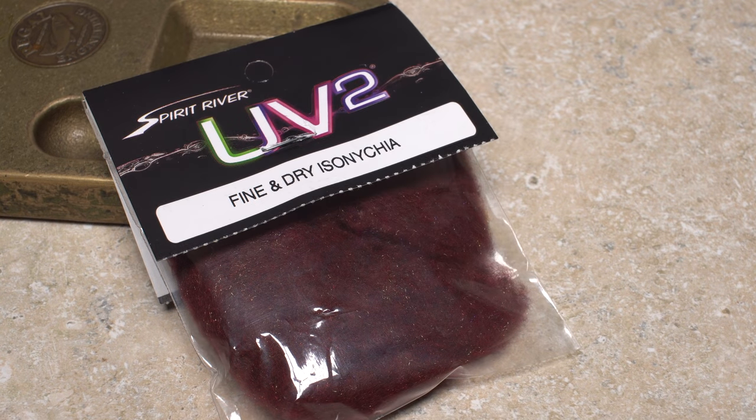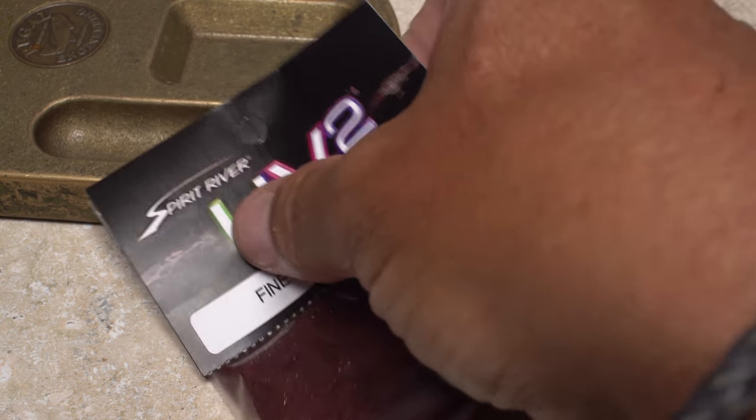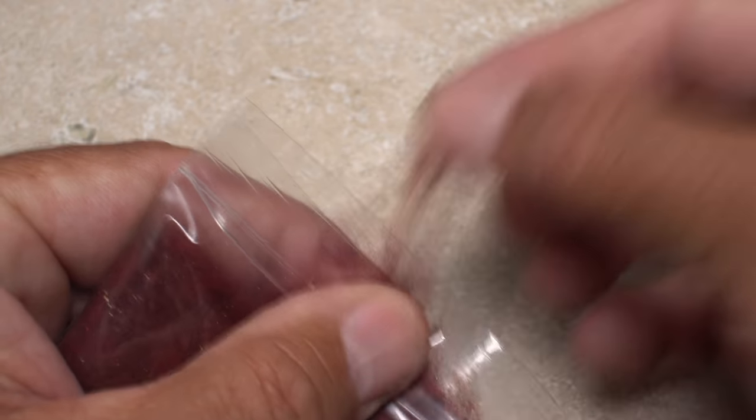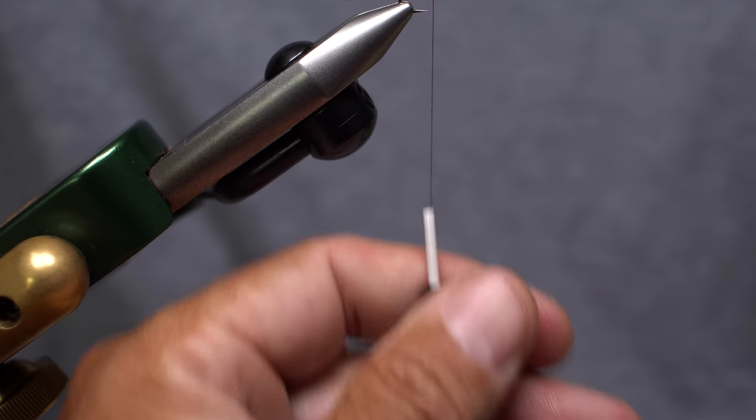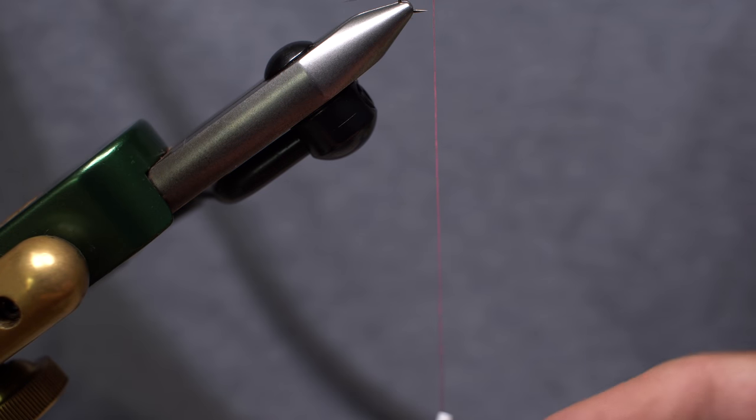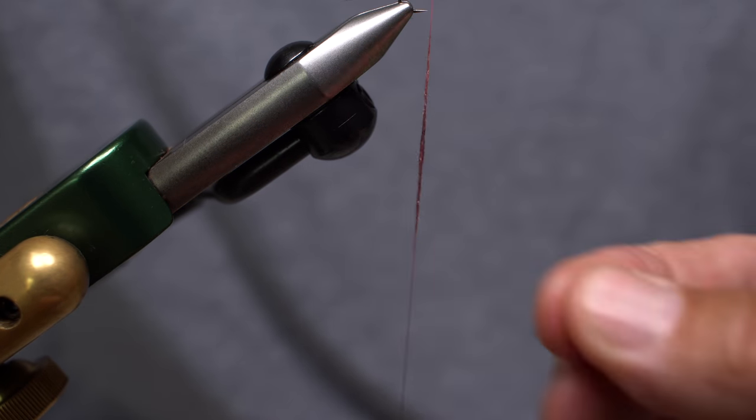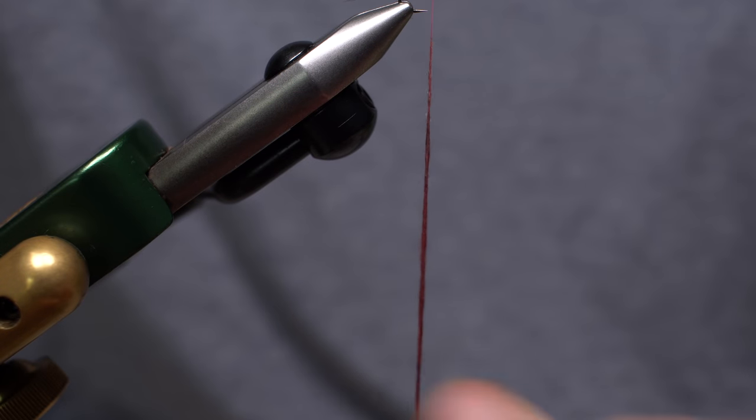Fine and dry isonychia colored dubbing is used to create the body of the fly. Take an ample clump from the packet. Pull down to expose 5 inches of tying thread, then use the dubbing to create a nice thin noodle about 4 inches in length.